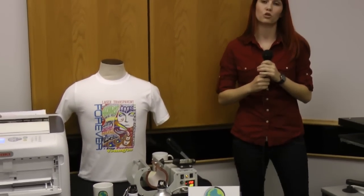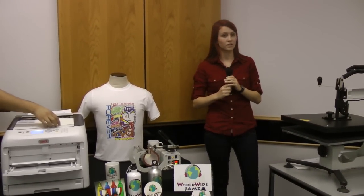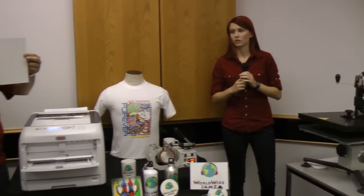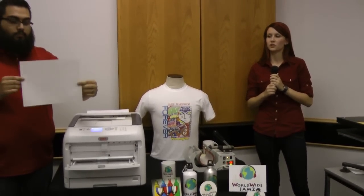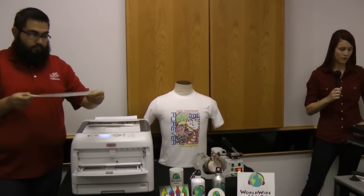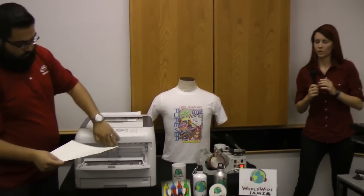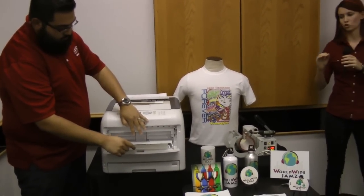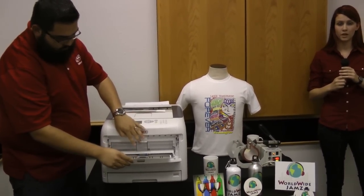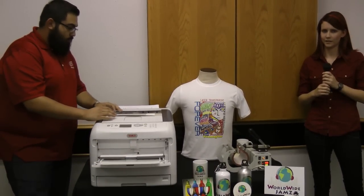Now we are going to show you how to make a shirt. We are going to be using the Forever Laser Transparent paper. With this paper it's best to use vector images. And so you're going to want to put it in the multi-purpose tray. The purpose of this is so that it goes straight through the printer. And now we are going to show you the settings that you want to print at.